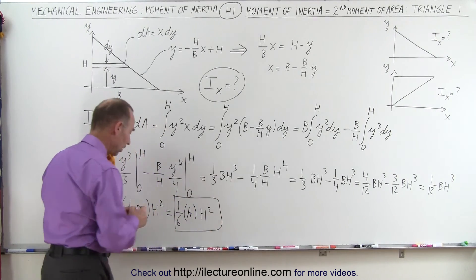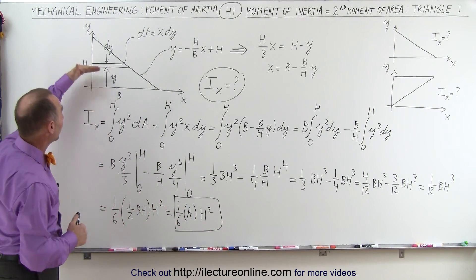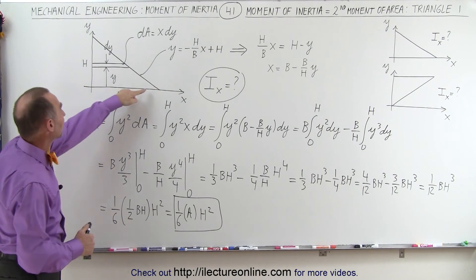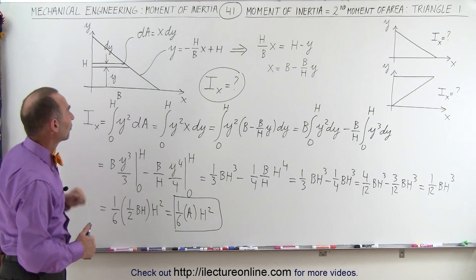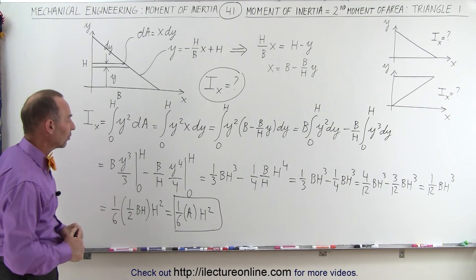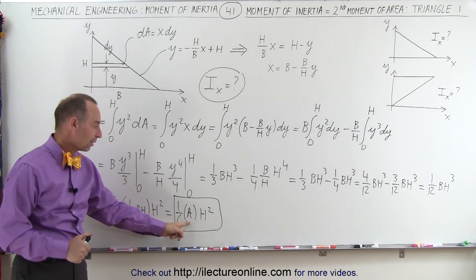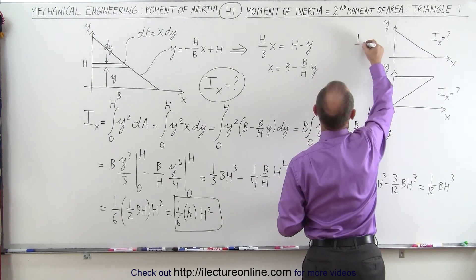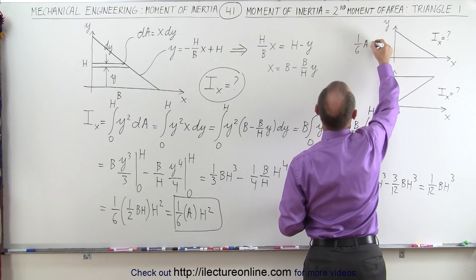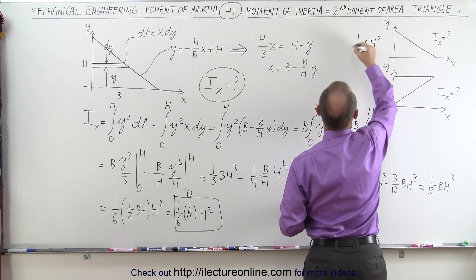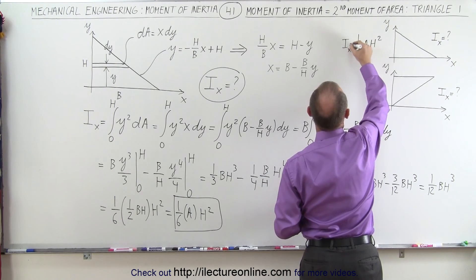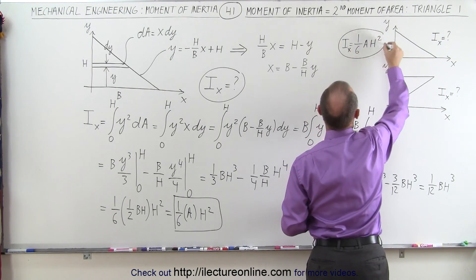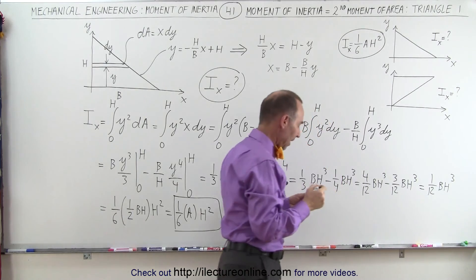And so this becomes equal to 1 6th the area of the triangle times h squared. And that would be the moment of inertia of that triangle situated with the base against the x-axis and finding the moment of inertia relative to the x-axis. So it's 1 6th the area times h squared. And let's write that down up here. So we have 1 6th the area times h squared as being the moment of inertia relative to the x-axis for the triangle situated like that.